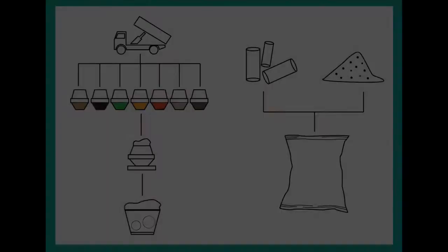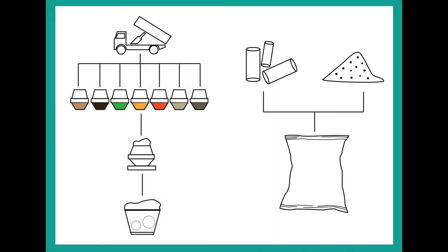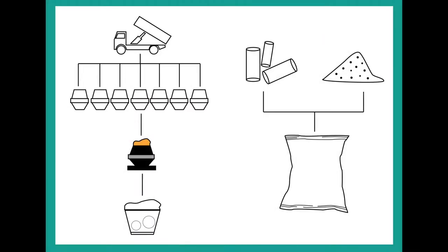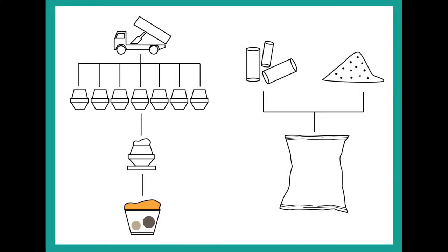This leads us to the second step, where the materials that have been sucked up are separated into different category materials. The materials are then released to the third process, which is the seasoning process, to be prepared for the next step — the mixing process.